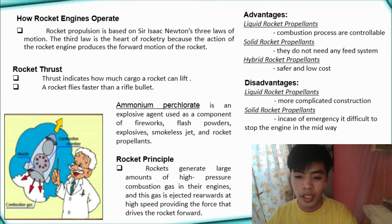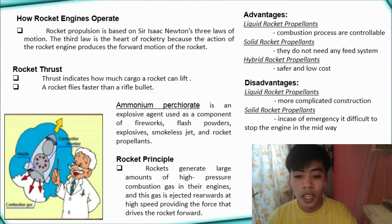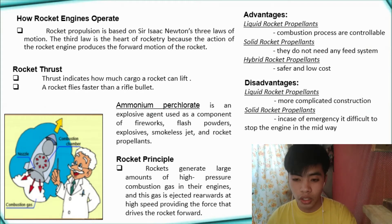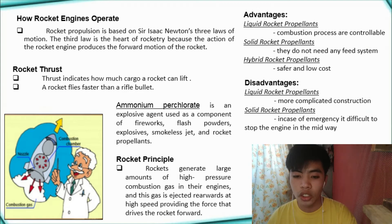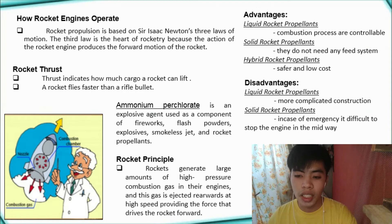Ammonium perchlorate is an explosive agent used as a component of fireworks, rockets, and propellants. It is also used in oxidizing, engraving, or etching compounds, and as a reagent in analytical chemistry.